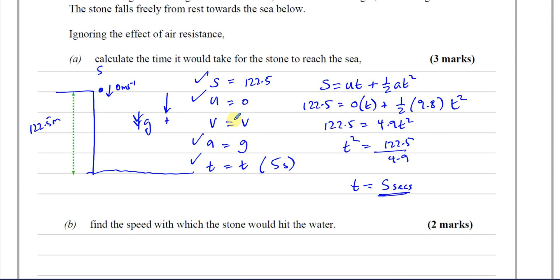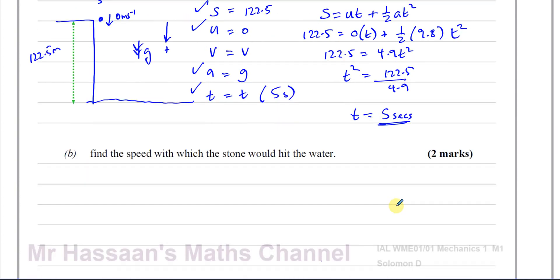We could use V² = U² + 2AS to find V. But since we have the time, we can also use V = U + AT. In general it would probably be easier to use the time, but if we got the time wrong then our answer for this part would also be wrong. Because we're able to use V² = U² + 2AS — which uses only originally given values — this is probably the safer option. Both should give the same answer.